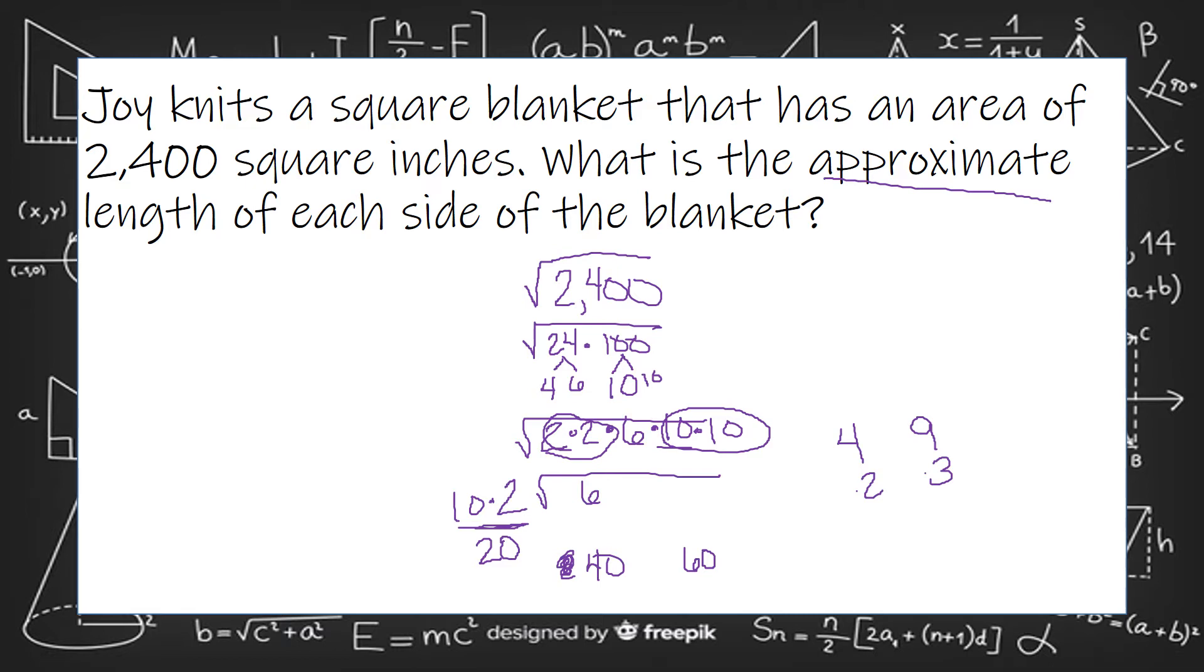Now, I could also say 2,400. Well, I know that 5 times 5 is 25. So 50 times 50 is 2,500.